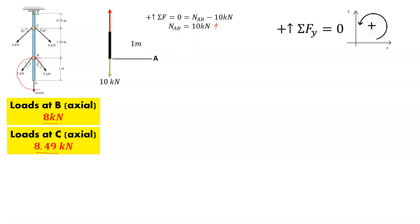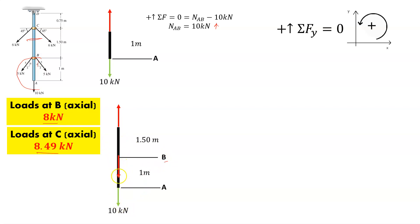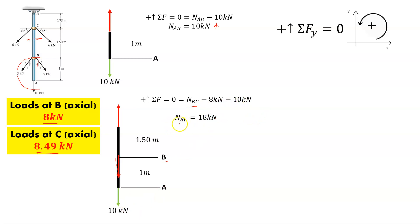Now moving up to section BC: looking at an extended free body diagram with A and B located. We have the 10 kilonewton applied load at A and the 8 kilonewton applied load at B. With the internal reaction N_BC, sum of forces equals zero. N_BC minus 8 kilonewtons minus 10 kilonewtons equals zero, so the internal load at BC is 18 kilonewtons.